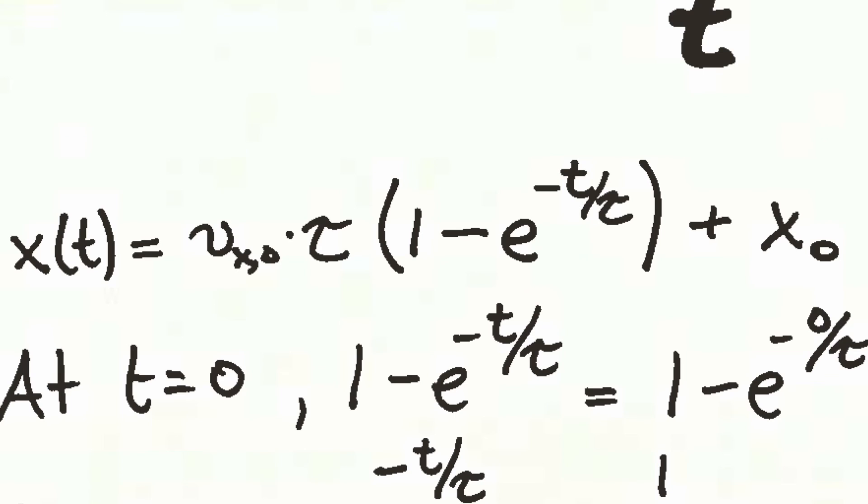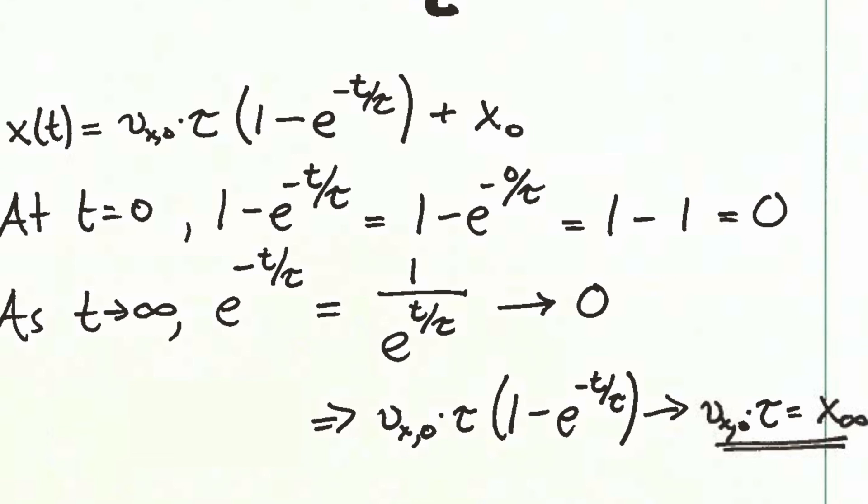Remember, our solution for x looks like this. And so we can think about how the solution behaves in the limit for t equals zero and for t going to infinity. For t equal to zero, the term in parentheses becomes 1 minus e to the zero. e to the zero is just 1, and so you get 1 minus 1, which is zero. So you get zero for the first term in the solution for x of t, and so what you're left with is x0. So x of t equals zero is x0 by definition.